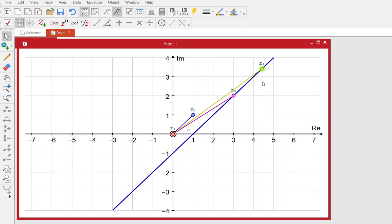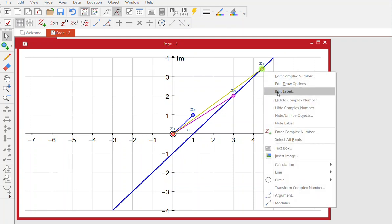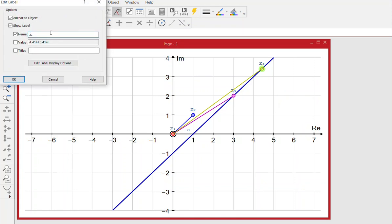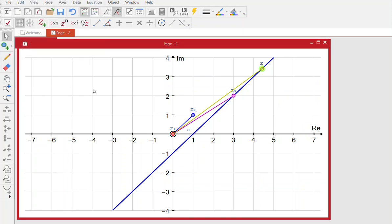Now I'm going to rename z4 as just z. So if I go to edit the label and take off the 4 there, and now I've got a general point z, which hopefully is still on that line.